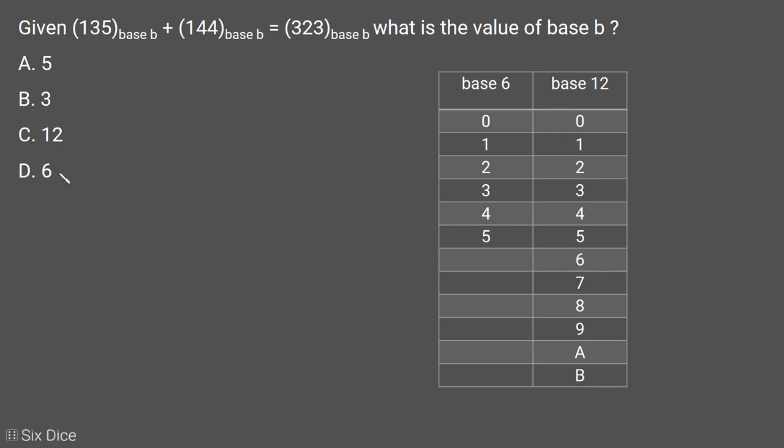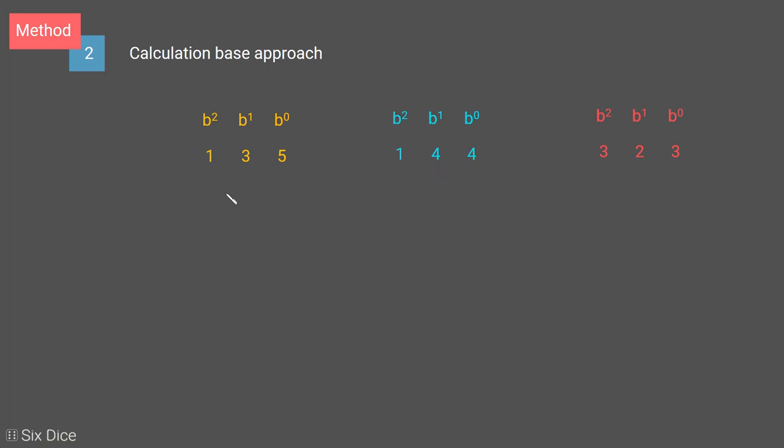Now we will take the second approach, which is the calculation-based approach. We will convert the given base b number into decimal, then we will add them and solve the quadratic equation.